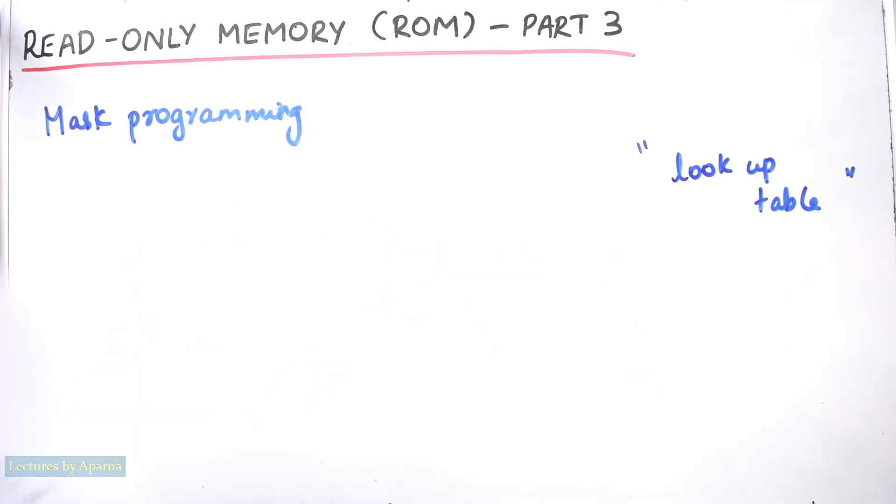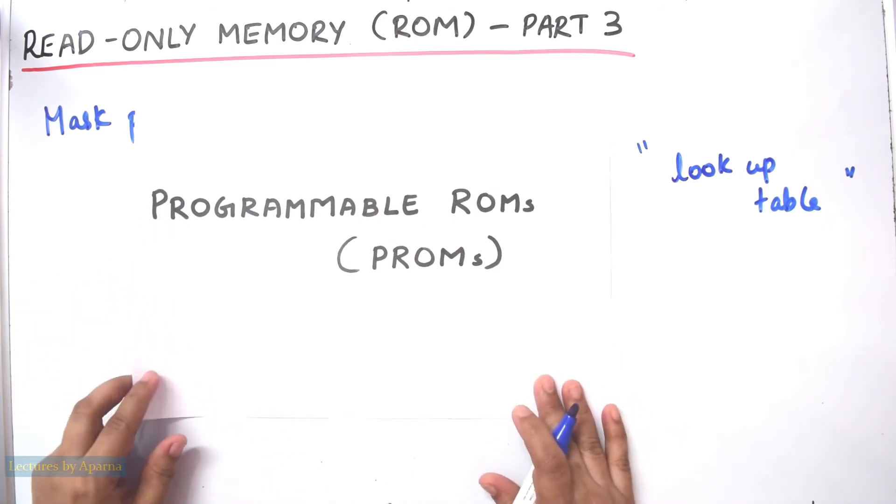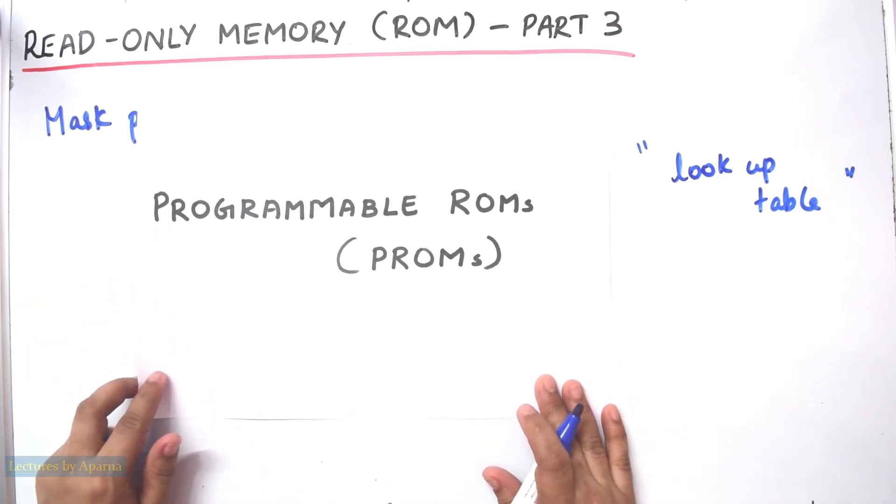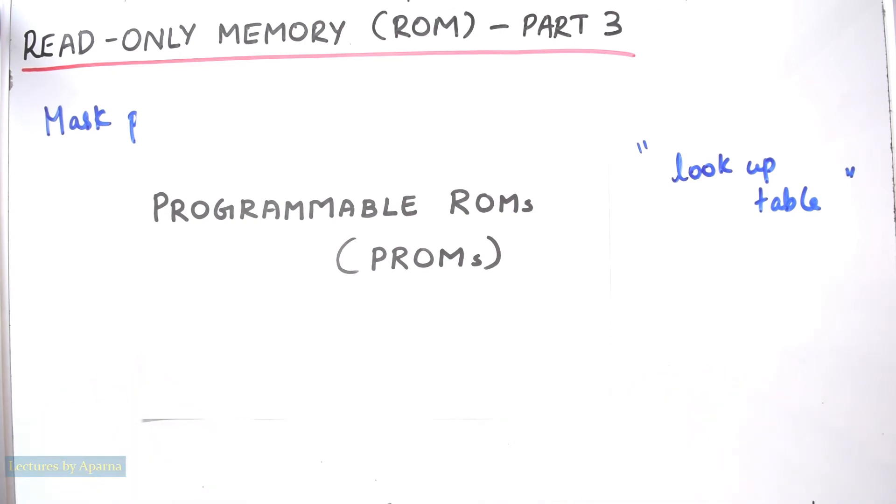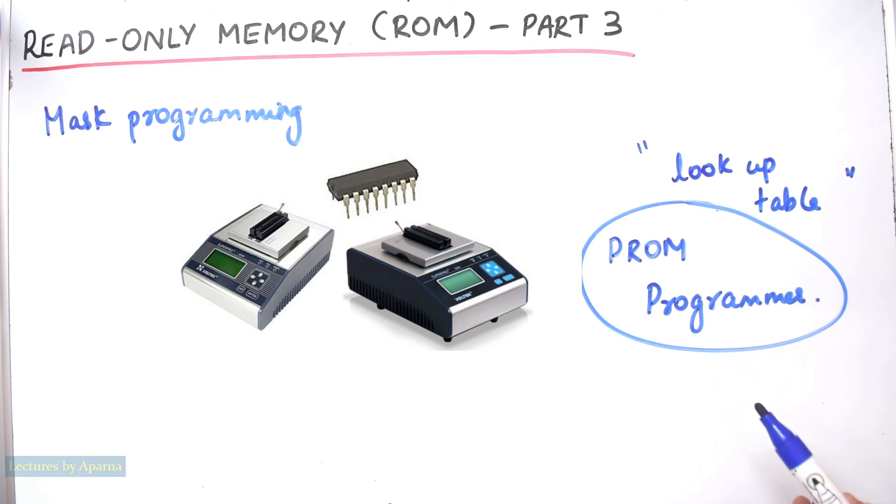The second type of ROM is programmable ROMs or PROMs. For small quantities, it is more economical to use this type of ROM. A PROM allows the programmer instead of the manufacturer to store the data. For that you will get an instrument called PROM programmer. PROM programmer is used.